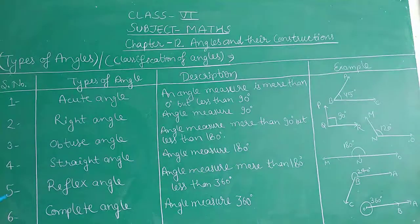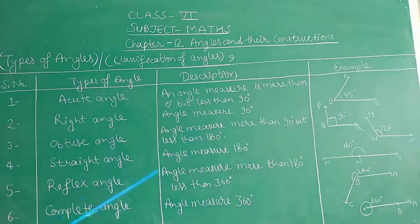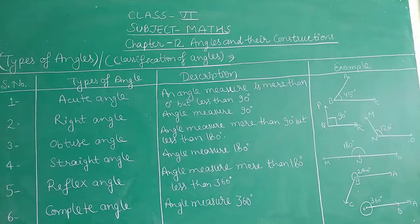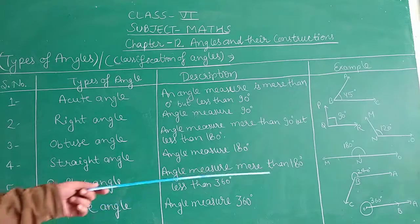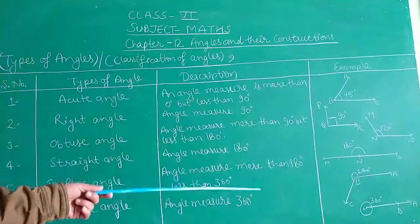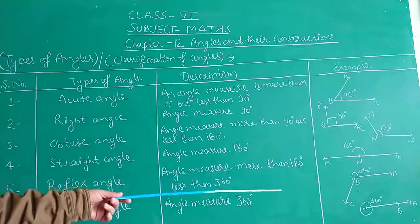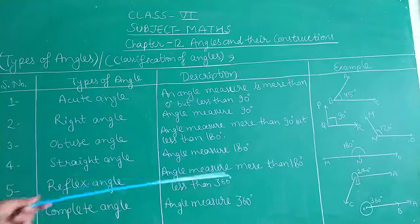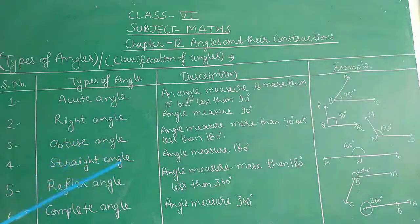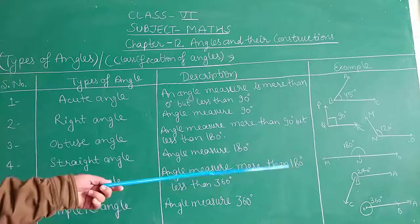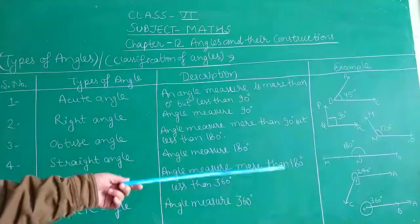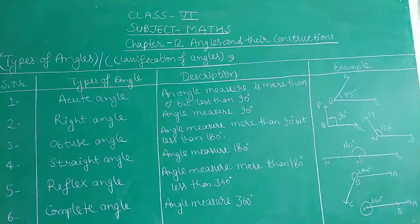The fifth type is reflex angle. An angle more than 180 and less than 360 degrees is known as a reflex angle. Reflex angle measurements include 210, 240, 260, 270, and 300 degrees. As given in the figure, angle ABC is a reflex angle of 240 degrees.